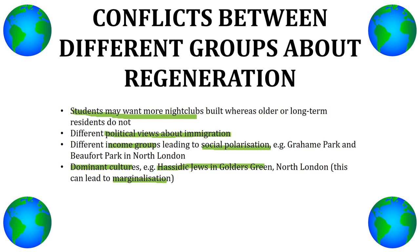Conflicts between different groups about regeneration include studentification — when a large number of university students live in an area. Students may want more nightclubs built, whereas older or long-term residents don't want the disruption of students coming in late at night, drunk, causing noise. So there's going to be a conflict based on what students demand.